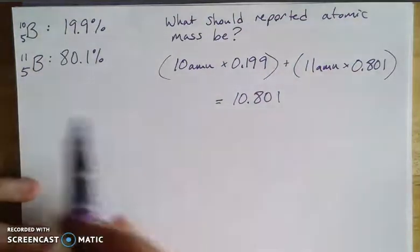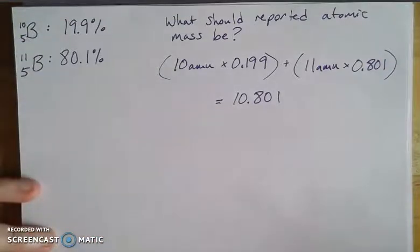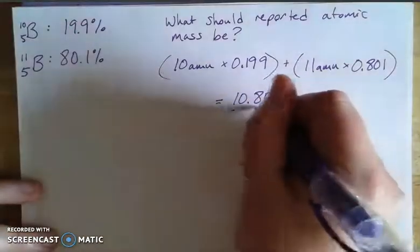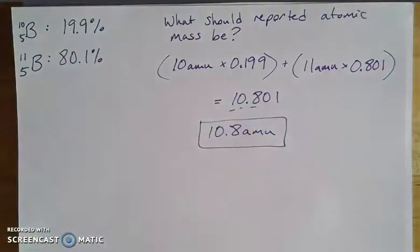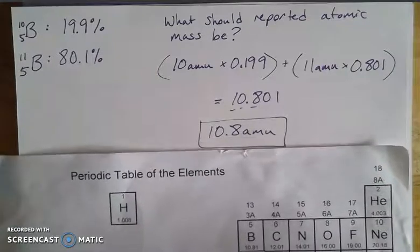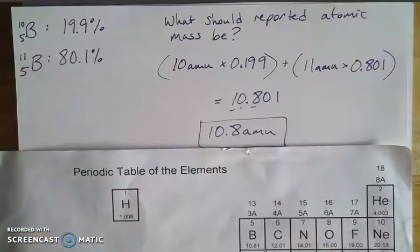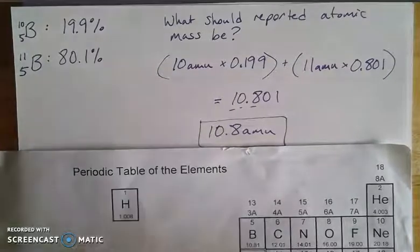I'll treat the atomic mass unit values as exact counts since they represent a total number of particles, so I'm limited by the three significant figures in my percentages. Rounded to three sig figs, that gives 10.8 — which should be the reported value. With more precise percentage measurements, you get 10.81 as reported on the periodic table. That's a bit about weighted averages and atomic mass — don't hesitate to reach out if you have any questions.